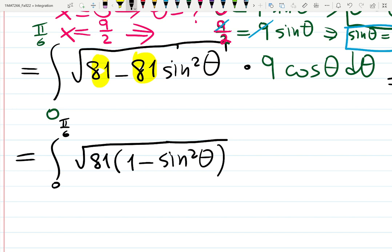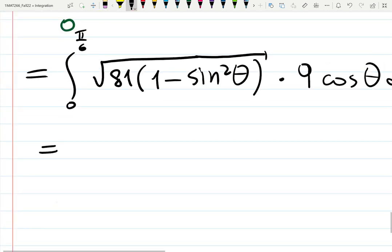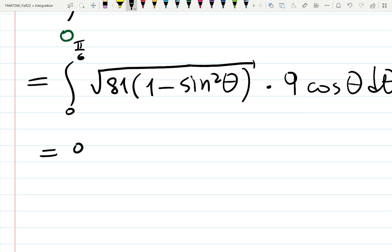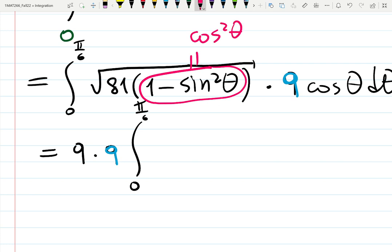√81 is 9, there's one more 9 waiting inside. This blue 9 also goes out of the integral from 0 to π/6. And then what is this piece? That is cos²θ. So cosine squared times cosine theta dθ.